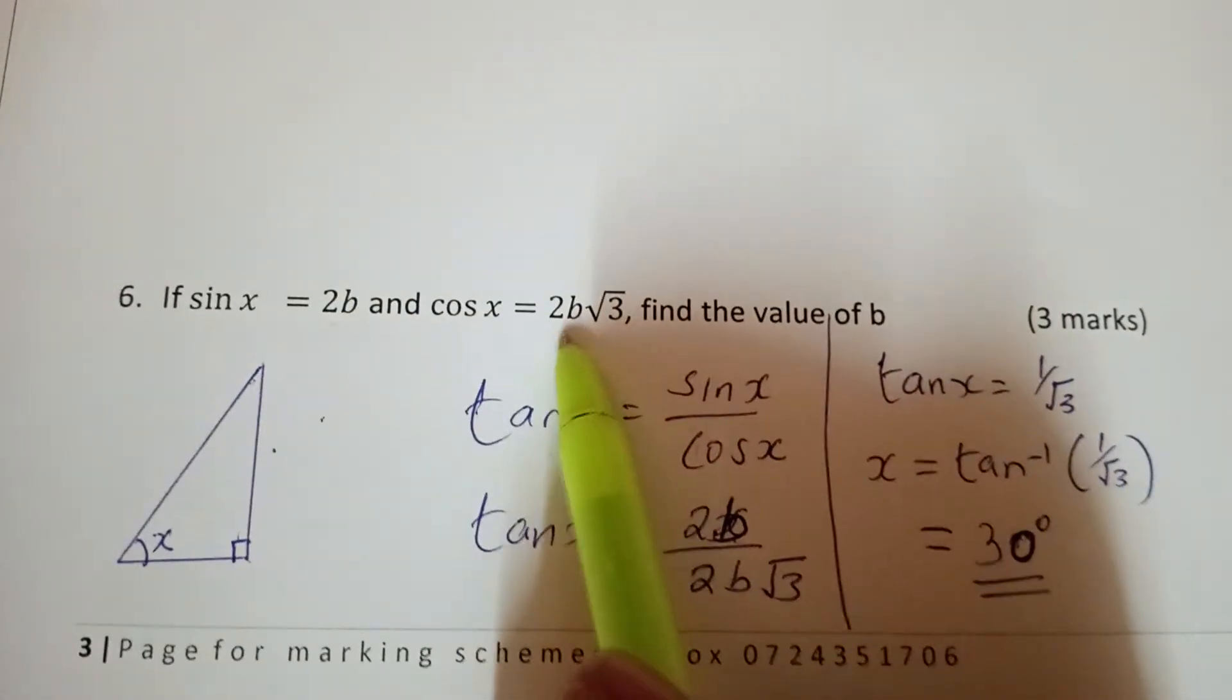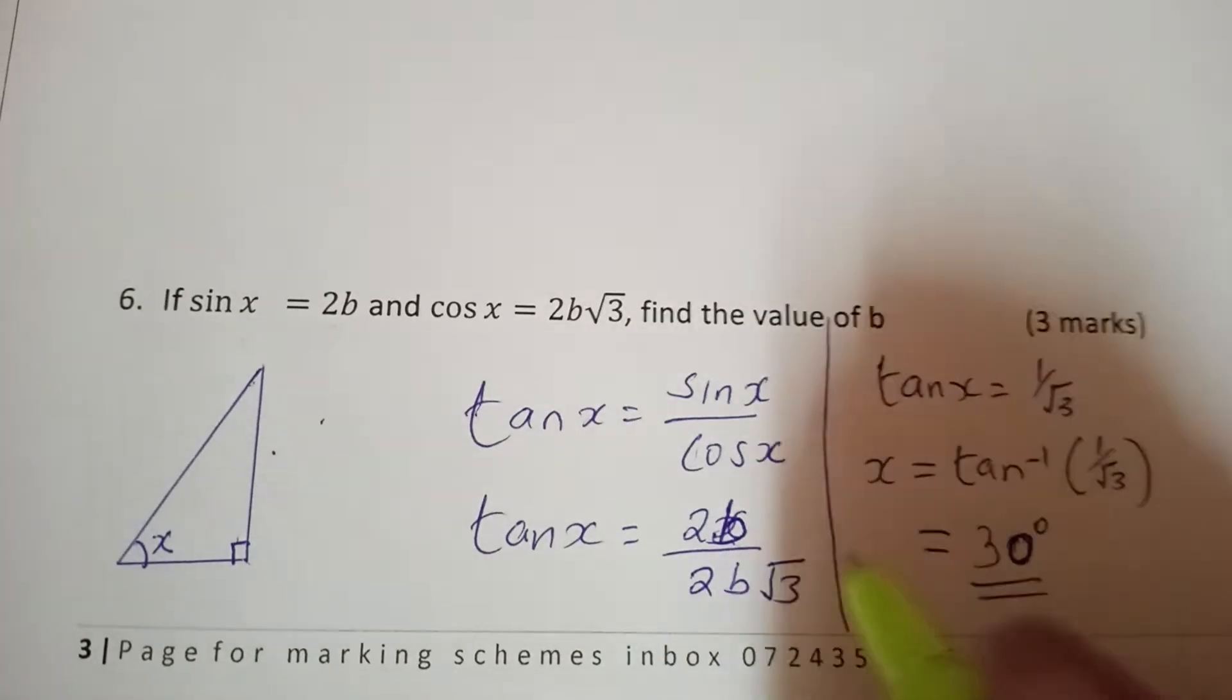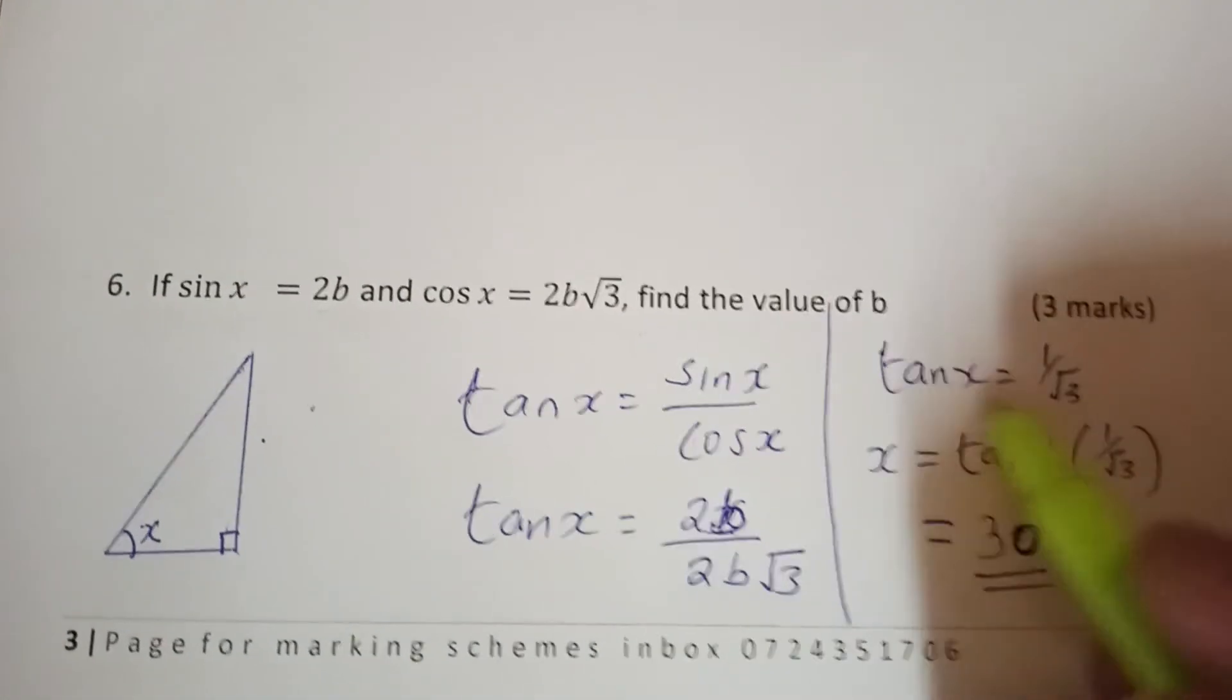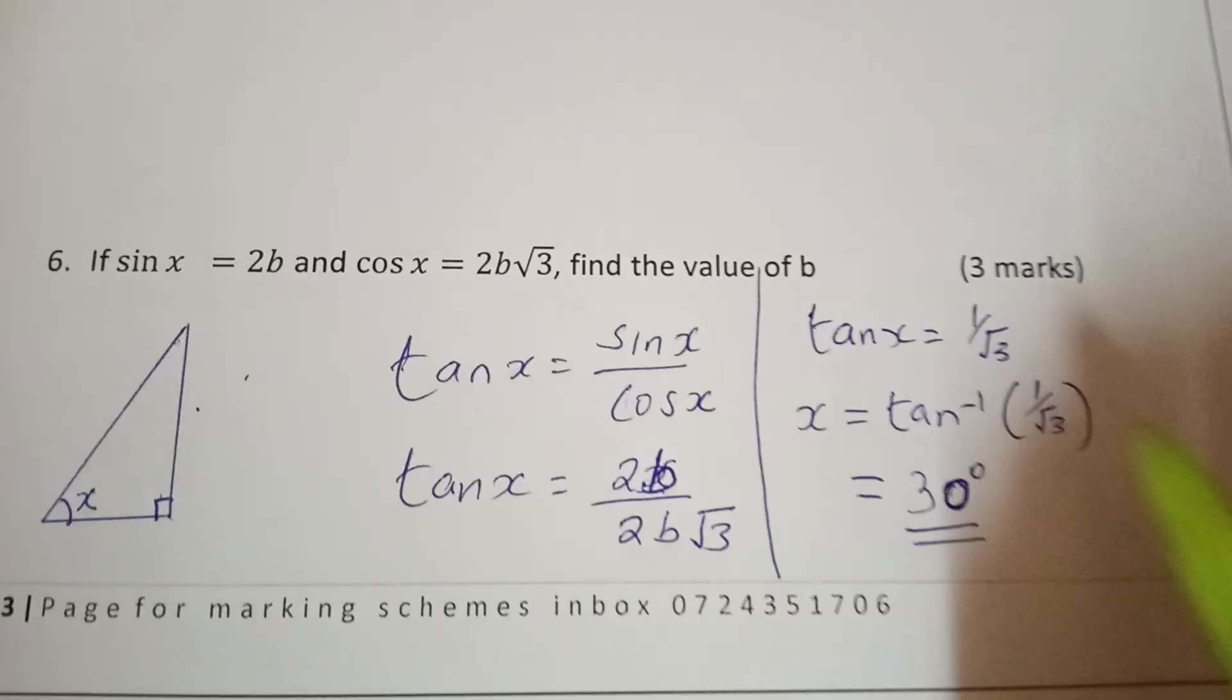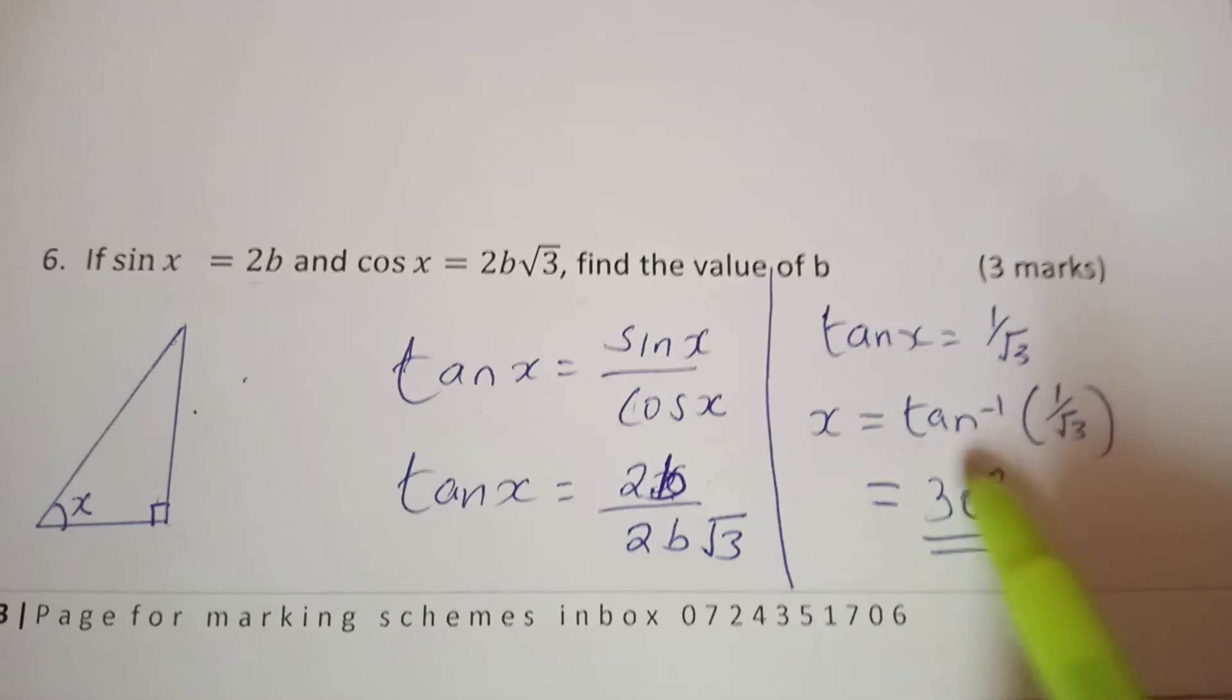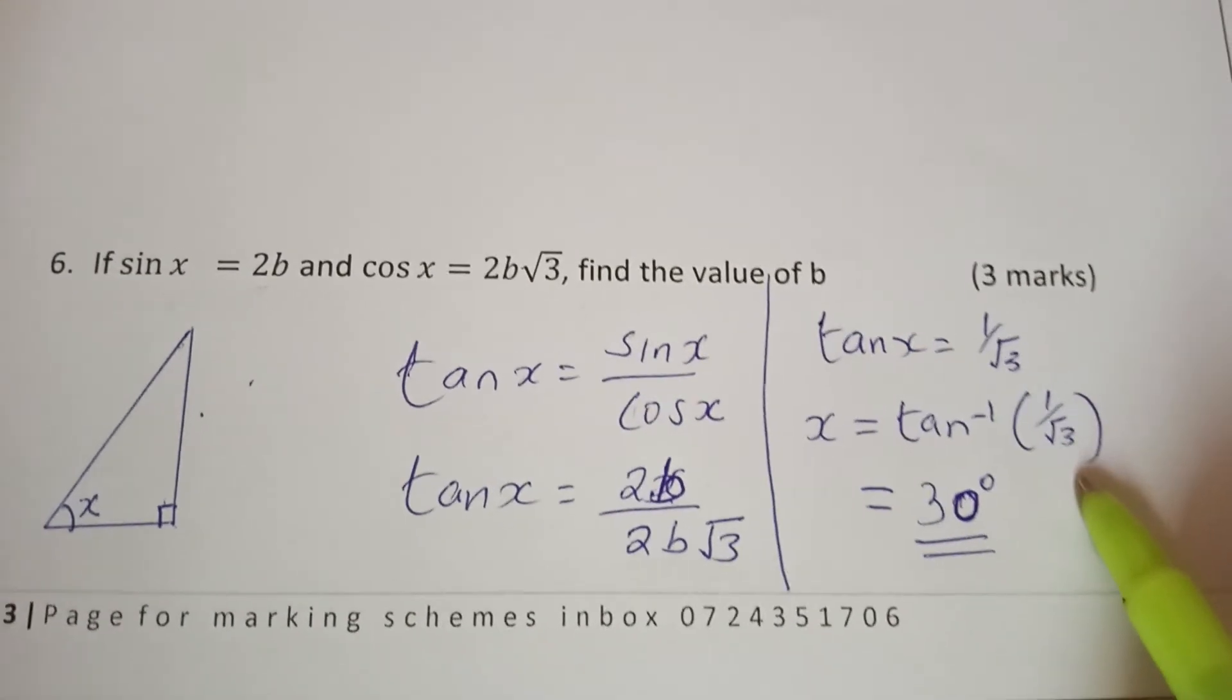And then you can see this 2b goes with the 2b, and you will remain with tan x equals 1 over root 3. And therefore x is tan inverse of 1 over root 3.